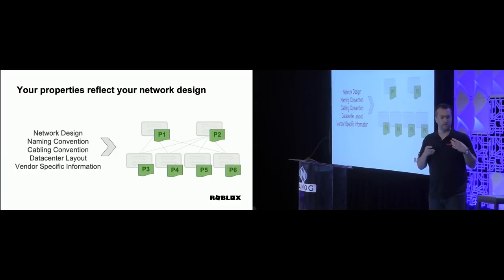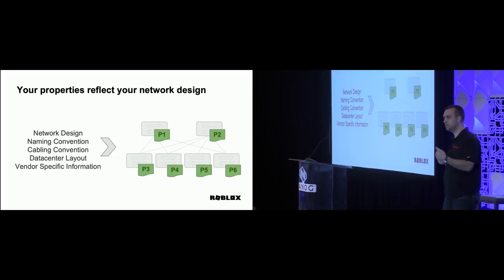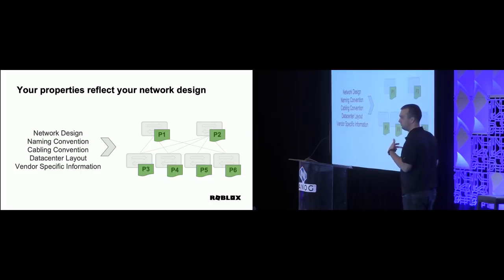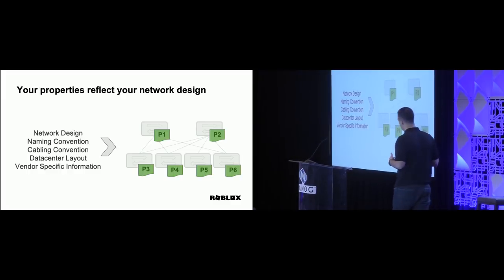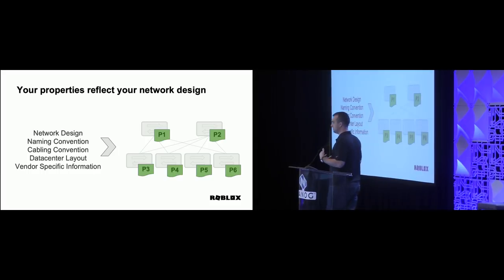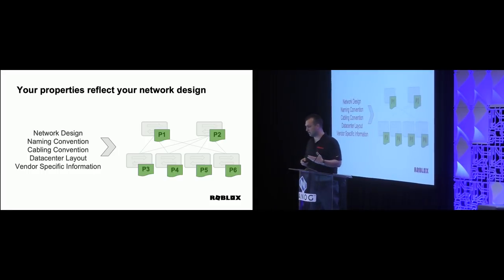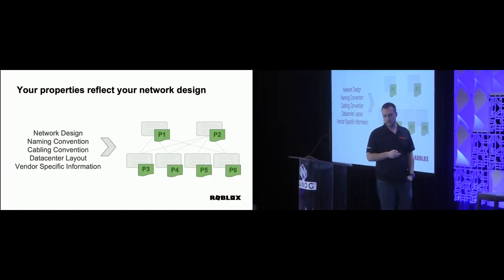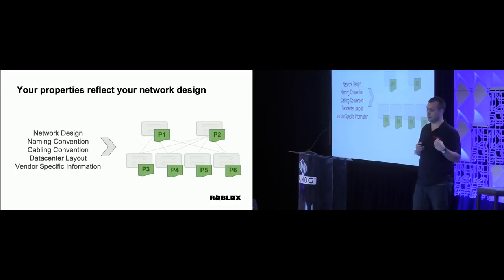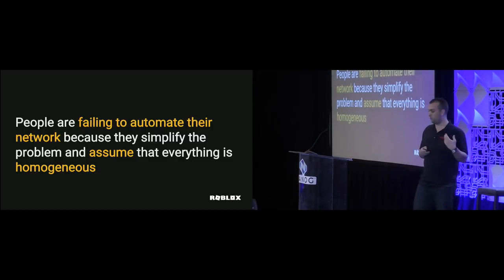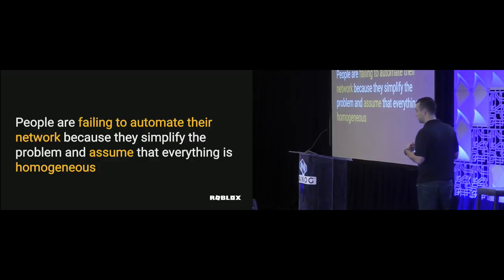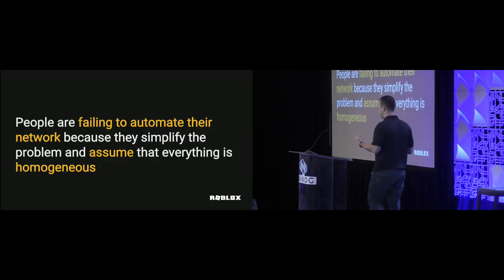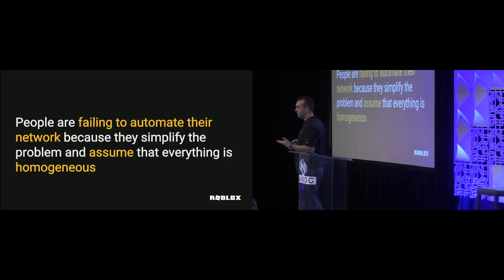Those network device properties are direct reflections of your network design, your cabling information, your naming conventions. And one thing I didn't realize is how important naming conventions are and how much time we could spend talking about that. You cannot mess with that — you have to respect it. All of those will change all the time. What I realized when I joined is that we often oversimplify this complexity and how things are changing constantly. Honestly, if I take all the simplifications I was doing in demos, I realized they're just not applicable to production. I've seen people failing at automating their network because they assume it's going to be homogeneous and simple.